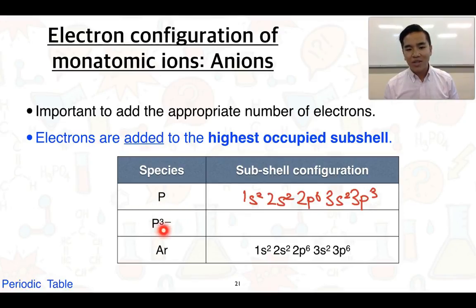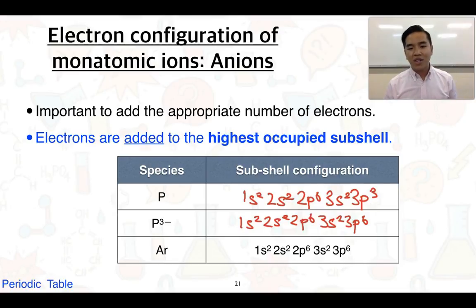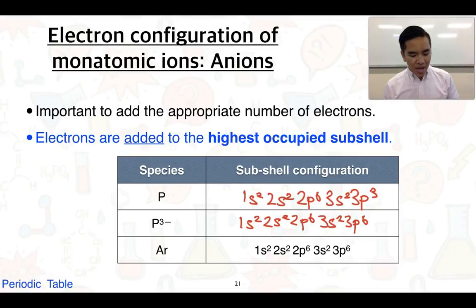The phosphide ion has a 3− charge, so that tells us it's going to gain three electrons. It's going to fill up the highest occupied subshell, which is the 3p subshell. The electron configuration of the phosphide ion is 1s² 2s² 2p⁶ 3s² 3p⁶, and you can see that this is exactly the same as the electron configuration of argon — a noble gas a little bit further down on the periodic table. Atoms will generally try to achieve those stable valence shell configurations that resemble our noble gases.